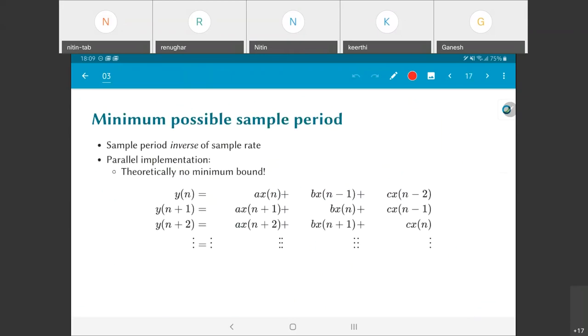One question that we can now ask is what is the minimum possible sample period? Remember I am talking about the sample period, not necessarily the clock period. The minimum possible clock period is determined by the critical path of a circuit. But if I ask you the question what is the minimum possible sample period that I can use?